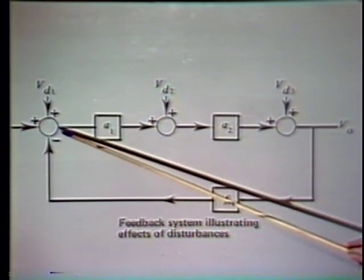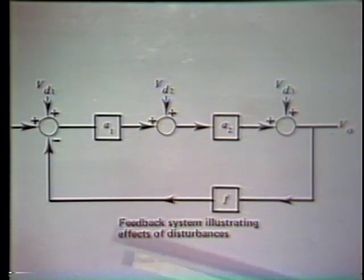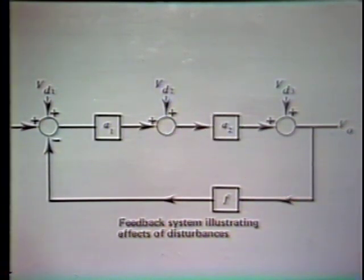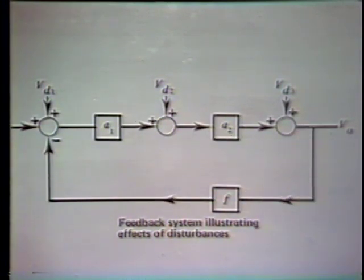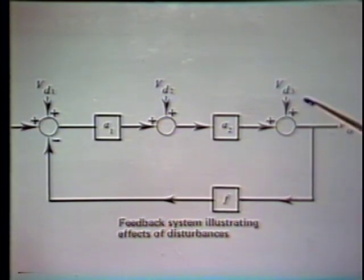Since the first disturbance is injected at the same point as the input, its transfer function is identical to the input-to-output transfer function. For the second disturbance, the forward path is A2, giving A2 over 1 + A1·A2·F. For the third disturbance, the forward path is simply 1, giving 1 over 1 + A1·A2·F. The loop transmission is the same for all cases.